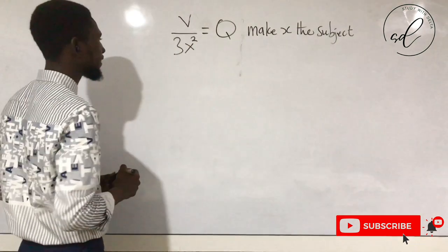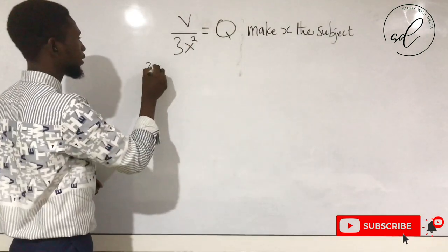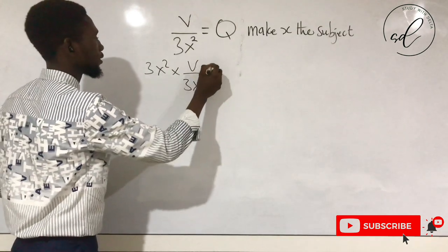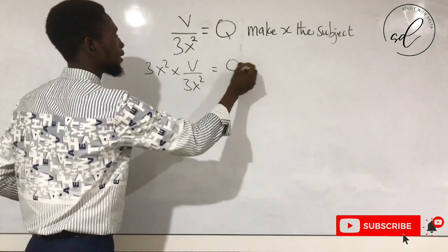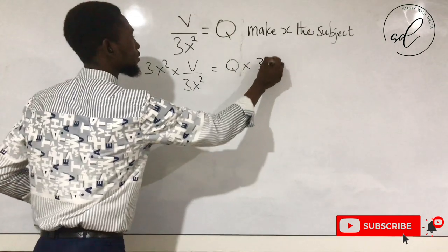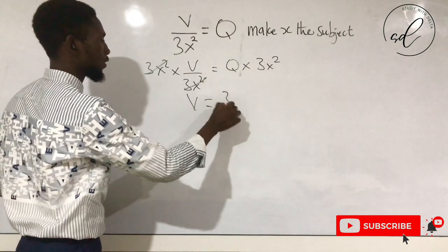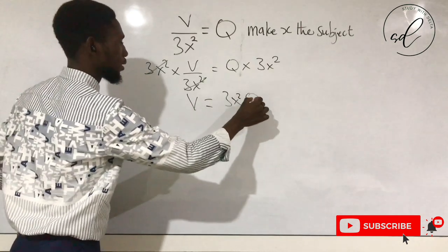So we multiply both sides by 3x squared. So 3x squared times 3x squared equals Q times 3x squared. This cancels out the denominator, and you have V equal to 3x squared Q.